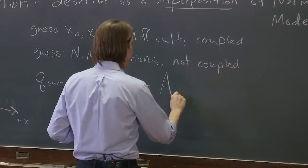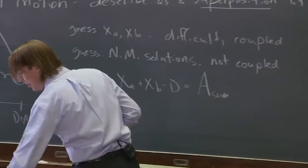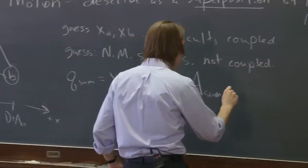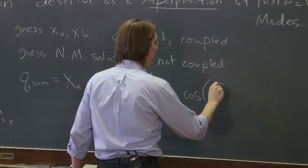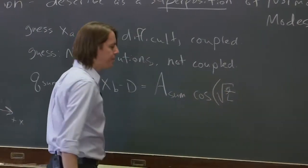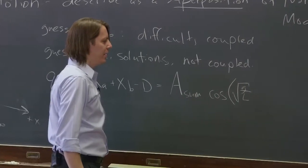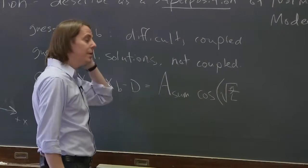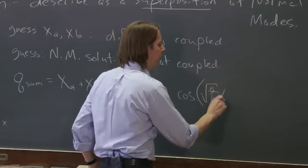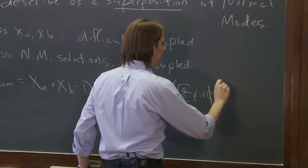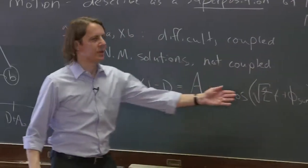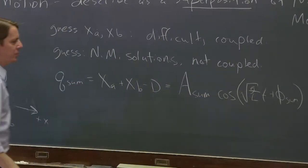So it's going to have some amplitude, A sum. I want to go with cosines. Cosine, and then it would be at the square root of g over L, because that's omega sum. That was the natural frequency of that mode, times time. Plus it might have its own phi, its own phase. So that's just your standard guess, standard simple harmonic motion guess.